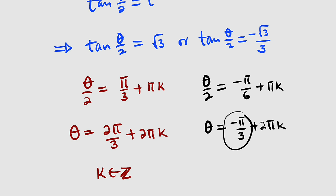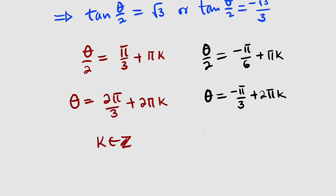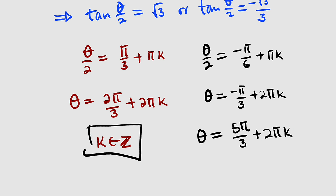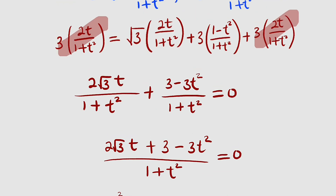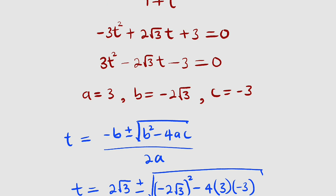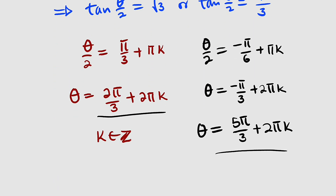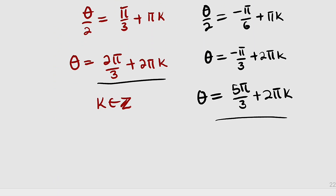The smallest positive angle for this is obtained by adding 2 pi to negative pi over 3, giving 5 pi over 3. So theta equals 5 pi over 3 plus 2 pi k, where k belongs to the set of integers. These are the possible solutions to our main equation. Thank you for watching — do share with your learning colleagues and don't forget to subscribe for more exciting videos.